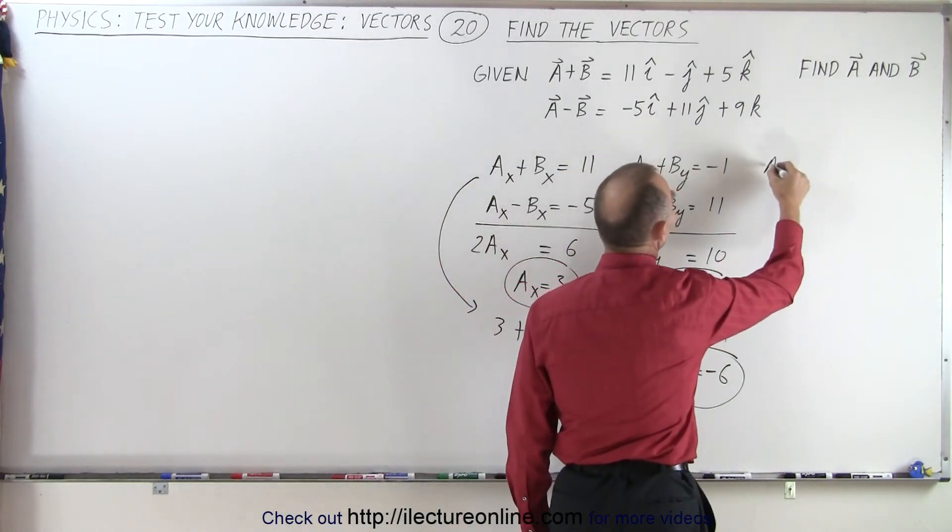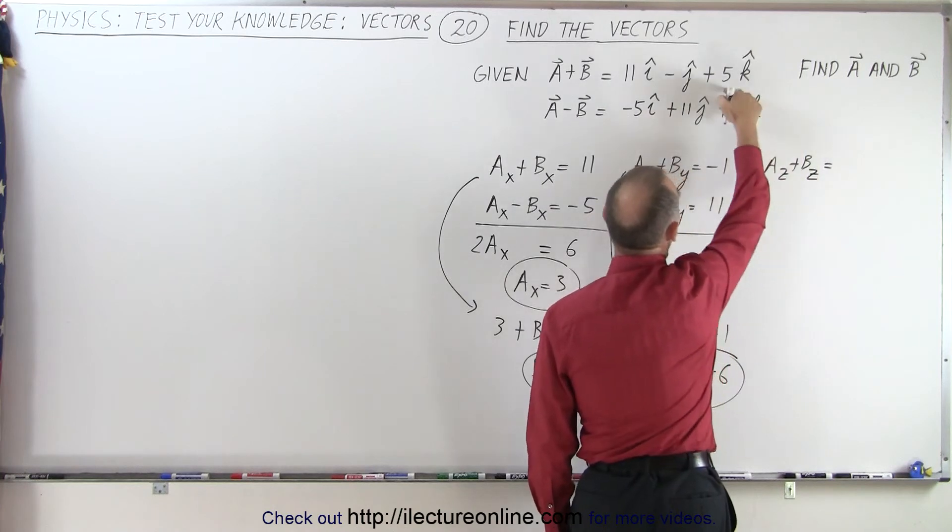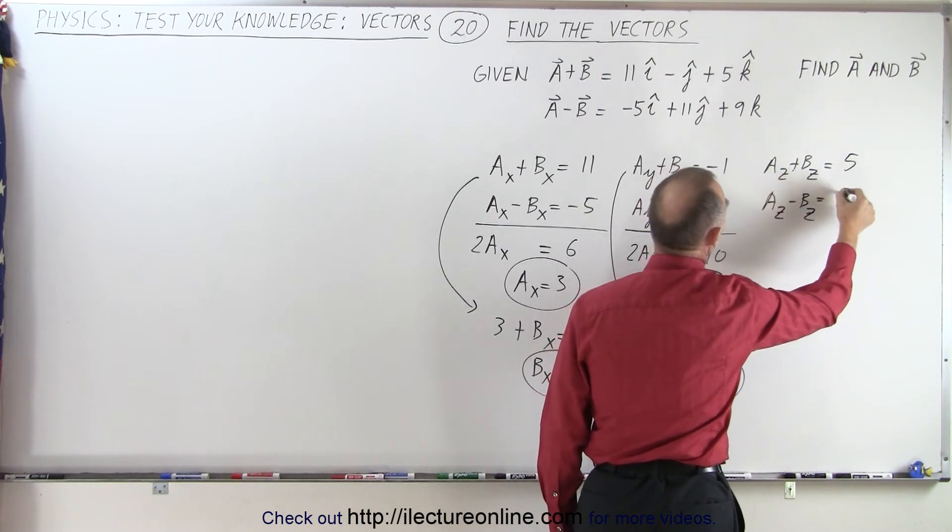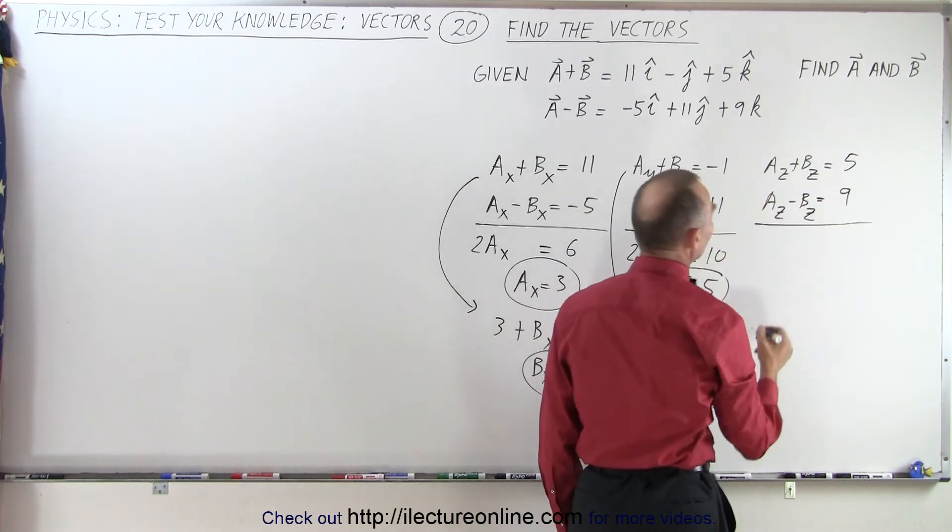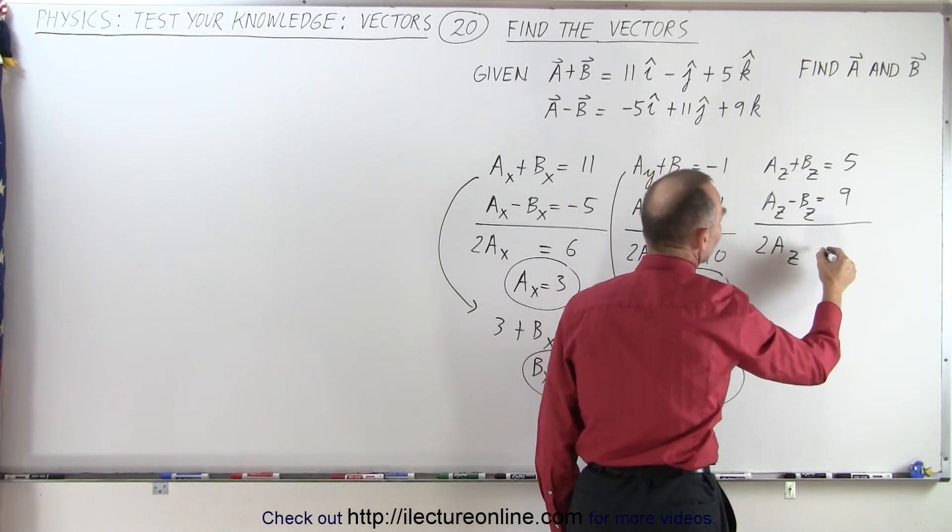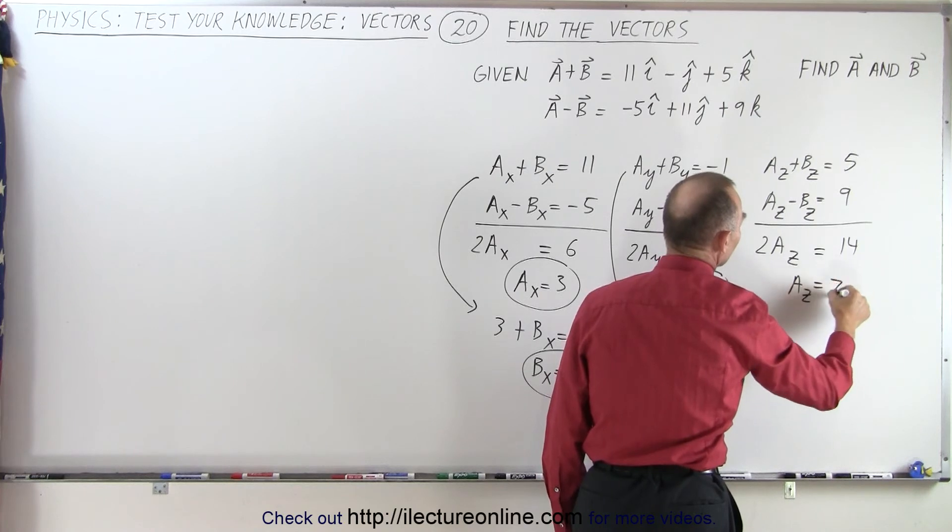We can say that a sub z plus b sub z must equal positive 5, and a sub z minus b sub z must equal positive 9. When I add those two equations together, I get 2 a sub z, the b sub z's cancel out, that's equal to 14, or a sub z is equal to 7.